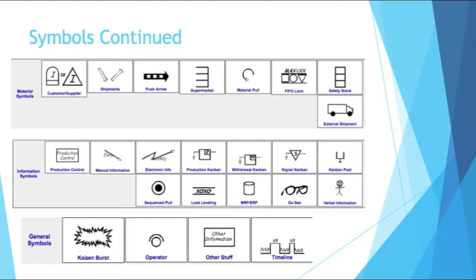Some important ones to note out of the general symbols: you have the Kanban burst. That's a pretty typical symbol for presentations and such. When you have some sort of improvement project going on in an area, it draws your eyes to that area. You have the operator symbol — that's pretty standard. A lot of times you'll just see the circle without the line, but either way it's a pretty universal symbol for an operator.